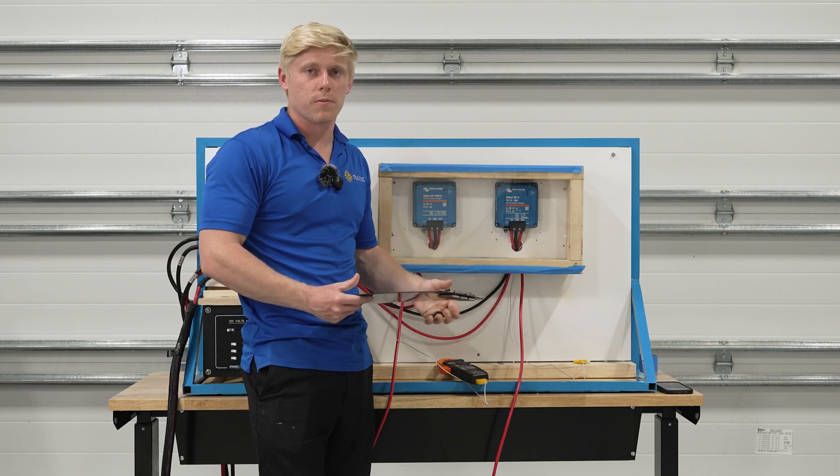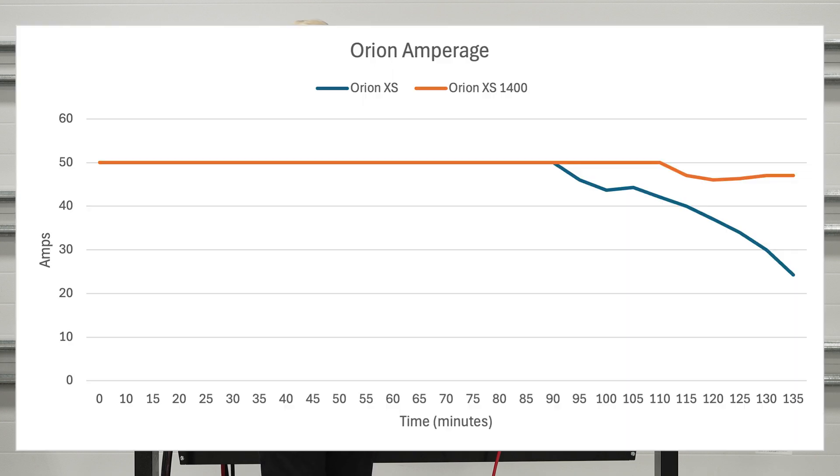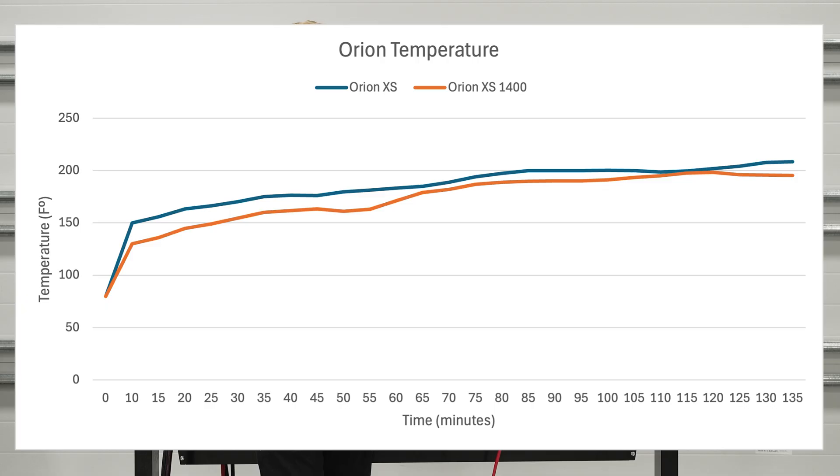And after we did that there was a big difference. So the XS started to really derate itself much, much more, and the XS 1400 began to heat up. It was kind of stuck around 190 and it began to heat up to reach the same temperature as the XS, almost reaching 200 and derating itself as well.